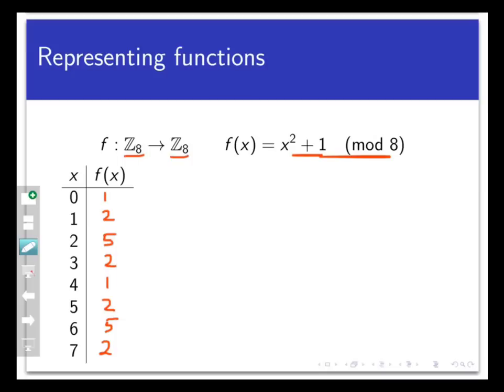So here is my function written as a table, and I learn a couple of new things about it. For example, I see that it's neither injective because 0 and 4 both get sent to 1, nor is it surjective because nothing got sent to 3.